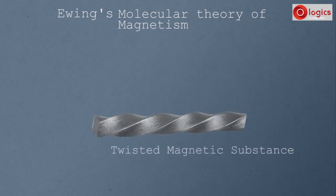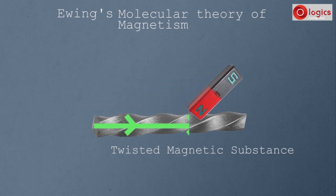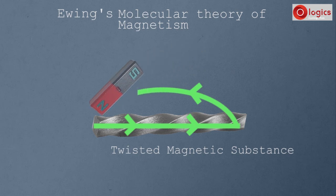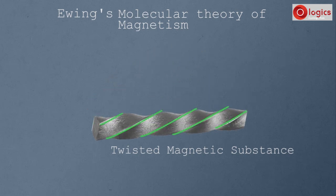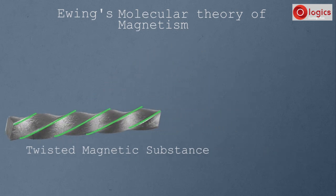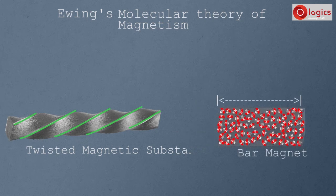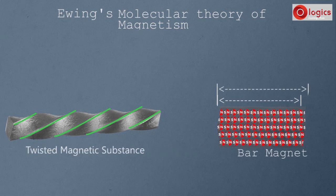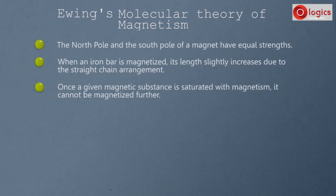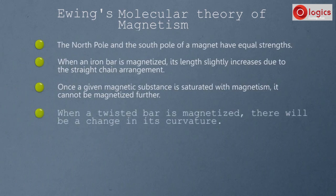For a twisted magnetic substance, when it is magnetized there is a change in its curvature. For a plain bar magnet, there will be a change in length. Ewing's molecular theory also explained why when a twisted bar is magnetized, there will be a change in its curvature.